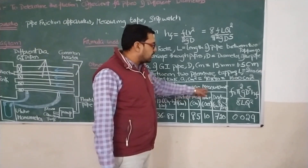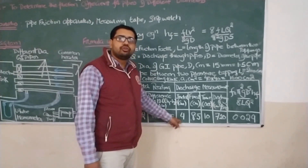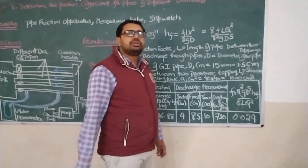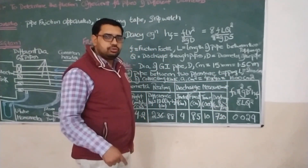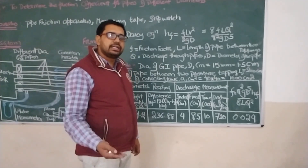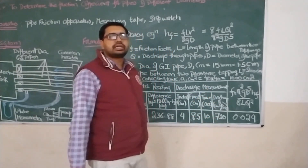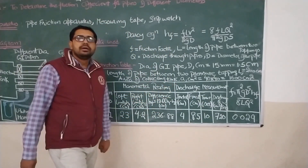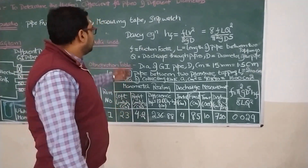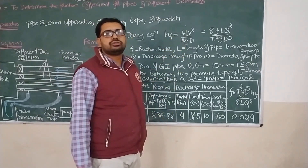Now coming to the discharge measurements. The initial level of the tank was 4 cm and the final level was 8.5 cm. The area of the tank is 1600 cm². The volume accumulated is (8.5 minus 4) times 1600, and since this is the volume in 10 seconds, dividing by 10 gives the discharge, which comes out to be 720 cm³/s. Now in order to calculate our objective — the friction coefficient — we will be using the Darcy equation, which we have also derived in our theory class.